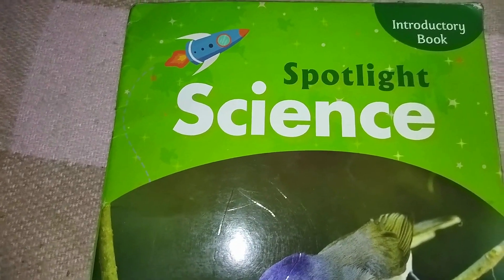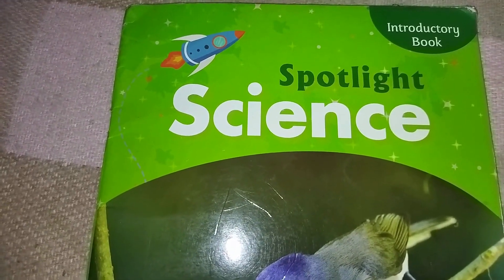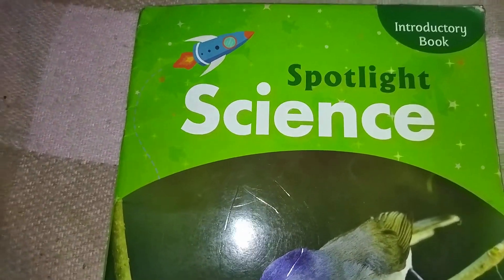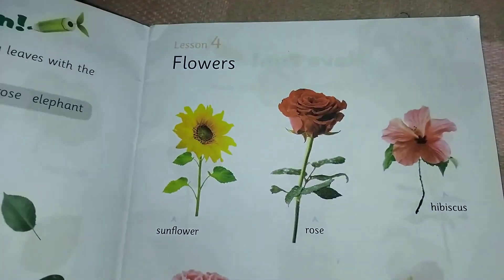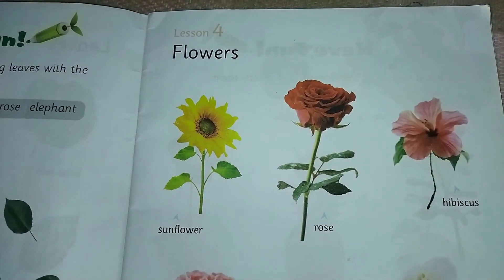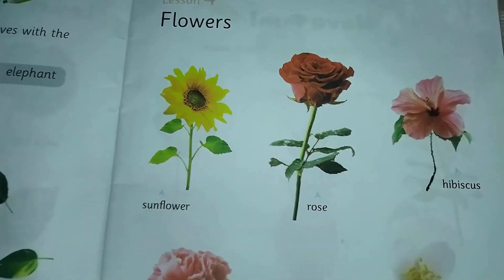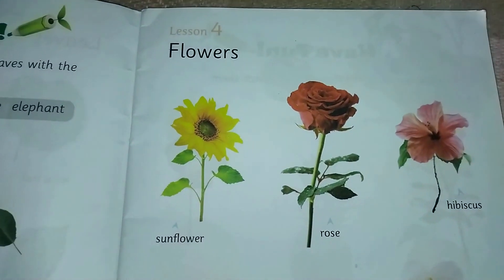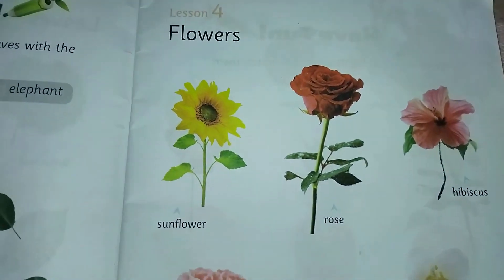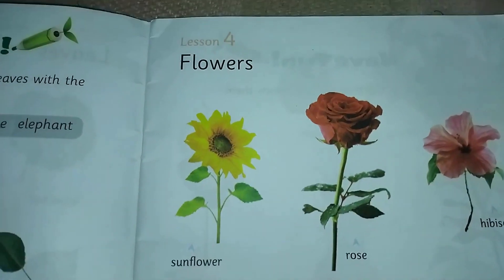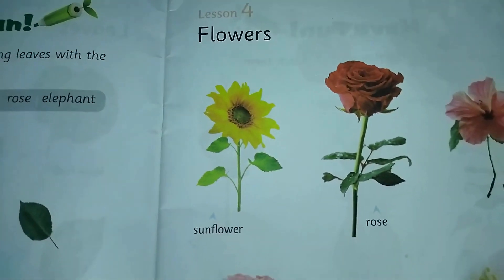We are reading Science Spotlight for Preschool Kids, and here is Chapter 4, which is about flowers. So let's learn the names of flowers.